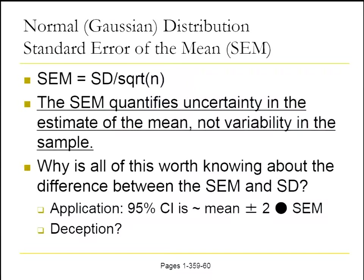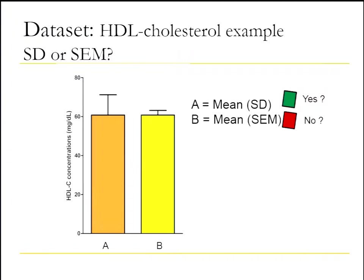Oftentimes the standard error of the mean is used deceptively to make data look a little tighter than they are. Here's an example using our HDL data: the orange bar represents the data as the mean plus or minus the standard deviation; the yellow bar represents it as the mean plus the standard error of the mean. The appropriate way to represent that data is by the orange bar. Individuals often use the standard error of the mean deceptively to make their data look tighter than it really is.